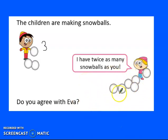And this girl here says, I have twice as many snowballs as you. So how many snowballs does Ava have? Let's check. 1, 2, 3, 4, 5, 6. So Ava has 6 balls.